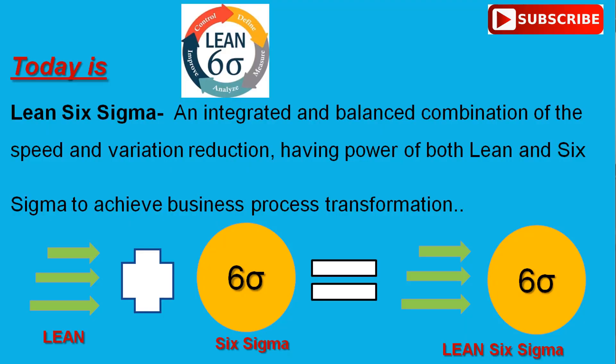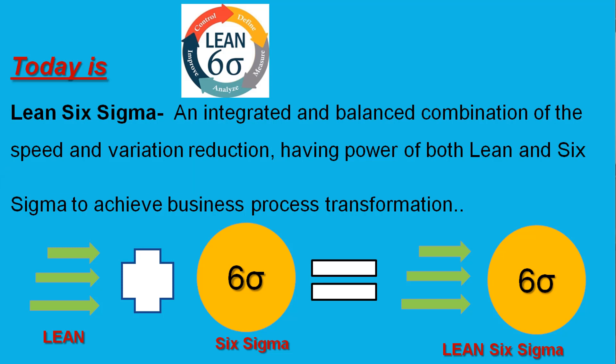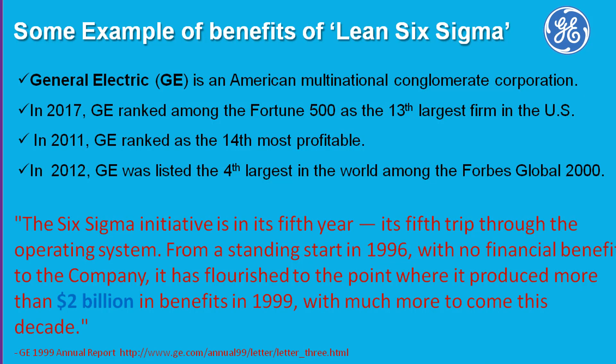So you have both the elements of Lean as well as Six Sigma. Lean basically uses the principle of waste elimination, whereas Six Sigma uses the principle of reduction in variation. Lean Six Sigma can therefore be defined as an integrated and balanced combination of speed and variation reduction, having the power of both Lean and Six Sigma to achieve business process transformation.